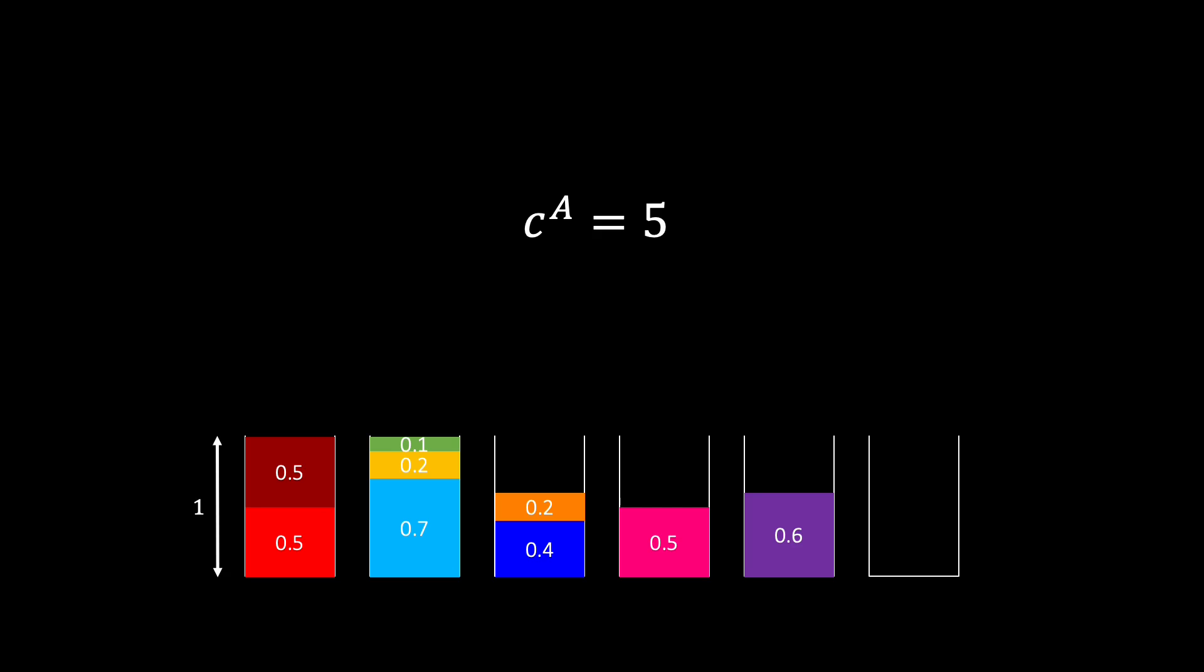We will show that our first fit algorithm always uses at most 2 times as many bins as the optimum. We denote the optimum cost by C star and we denote the total weight of the items with a big W.